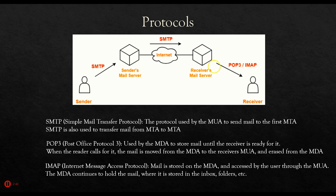The MDA uses one of two protocols: POP3 or IMAP. POP3, the Post Office Protocol version 3, is used by the MDA to store email. When the user requests that email, it just dumps it from the MDA to the MUA, the user interface. This was common in the early days with clients like Outlook or Thunderbird — your mail would be dumped onto your local client and was no longer on the server. So you had to be sitting in front of that specific computer in order to read your old mail.